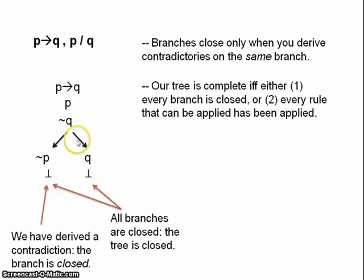So, what this means is our tree is closed, every branch is closed. And, what that means is that our original set of premises here is inconsistent. Remember, we assumed the negation of the conclusion. And, we derived a contradiction, no matter how we interpreted the formulas. So, our original argument up here, if P, then Q, P, therefore Q, that must be valid.